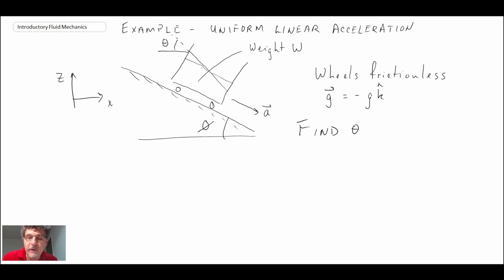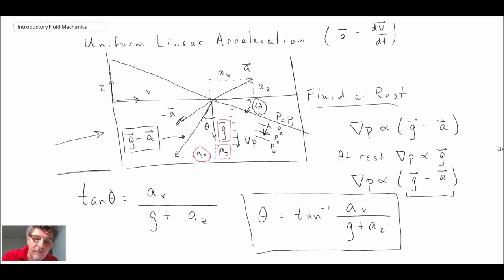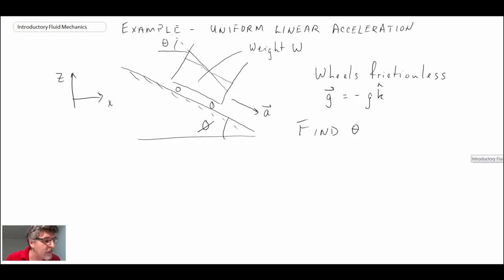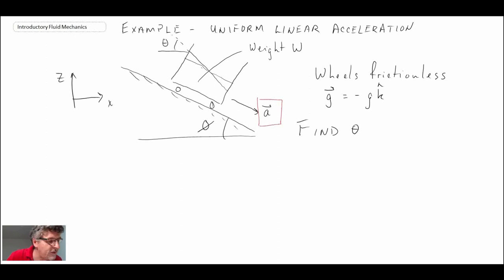We're going to apply the relationship derived in the earlier segment for the free surface under uniform linear acceleration. The first thing we'll do is resolve the acceleration components for the container going down the incline.